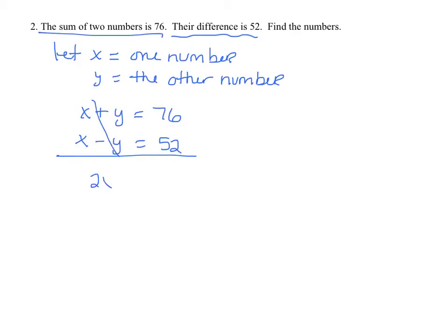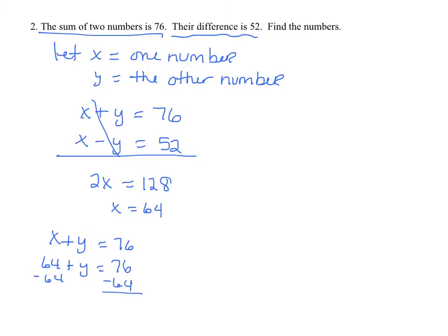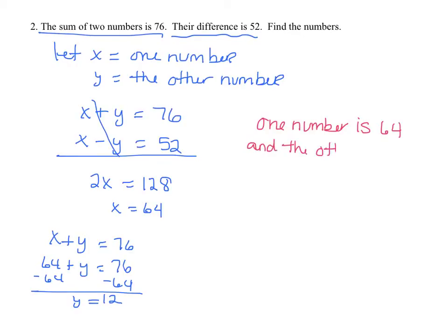The Y's will automatically cancel out. 2X is equal to 128, so X equals 64. Then I can go back and plug in: X plus Y equals 76, so 64 plus Y equals 76. If I subtract 64, Y is equal to 12. Conclusion: one number is 64 and the other is 12. If I add them I get 76; if I subtract them I get 52.